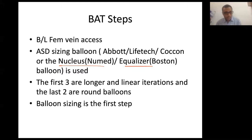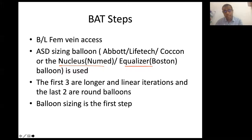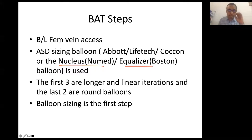Balloon sizing is the first step but we do not perform it in all cases, as thorough 2D and 3D imaging usually provides sufficient information. Balloons are used for support, not routine sizing. However, in cases of multiple ASDs or aneurysmal septum where sizing is uncertain with routine 2D and 3D, we do use balloon sizing. This is especially important to avoid oversizing. Most defects in the context of aneurysmal septum are smaller, and here the value of GORE and Helix devices — which are non-self-centering with less metal — comes into play for accurate sizing.